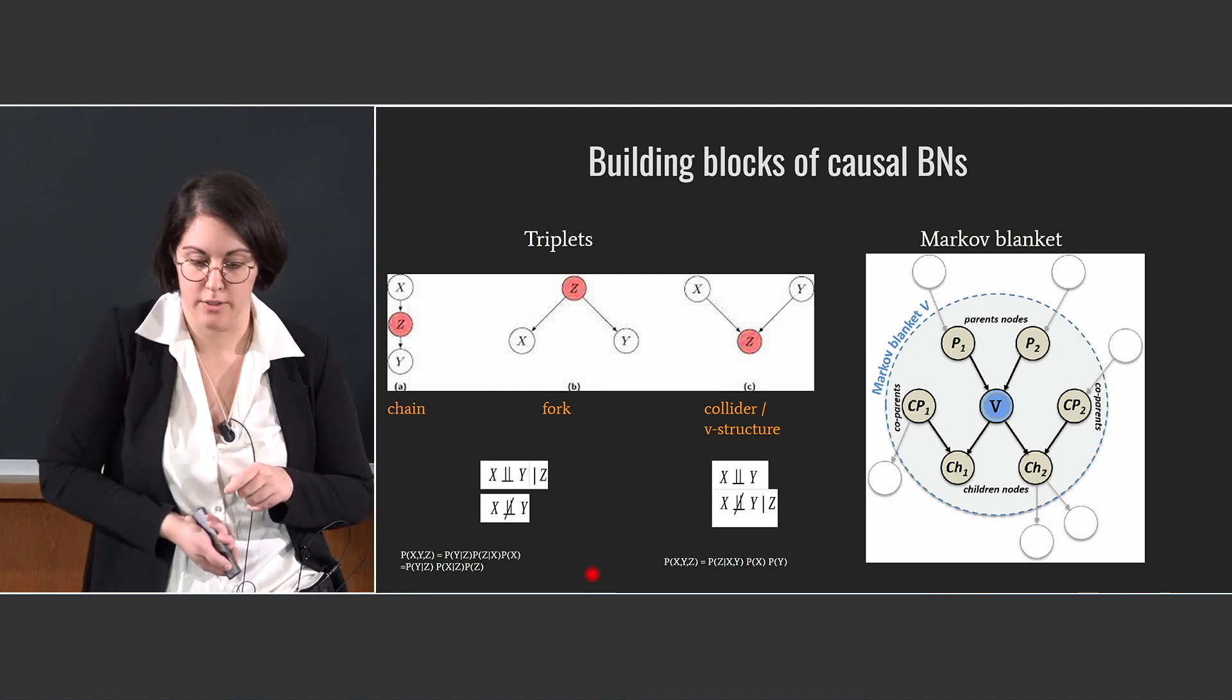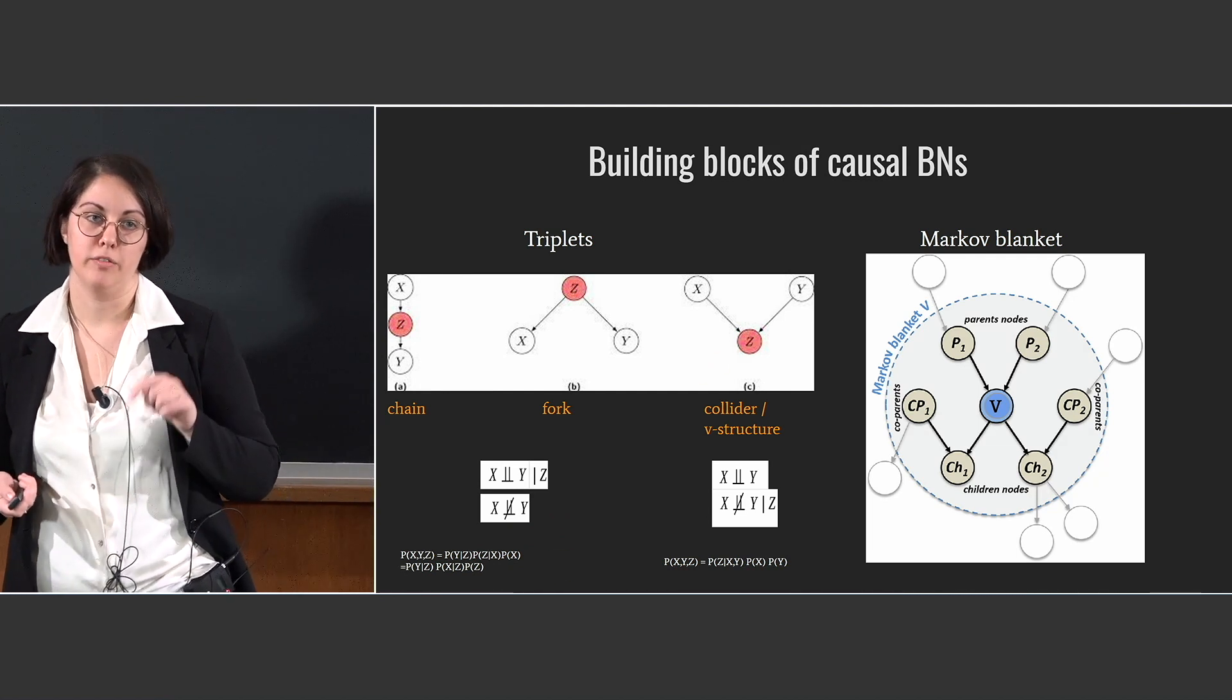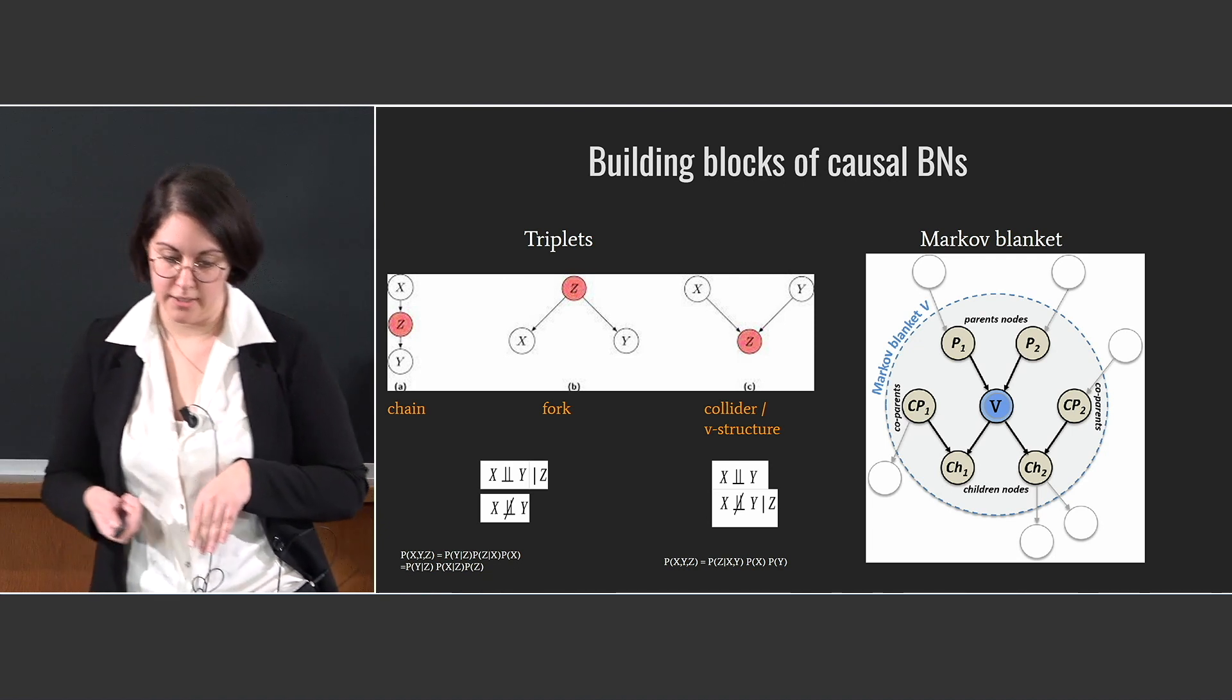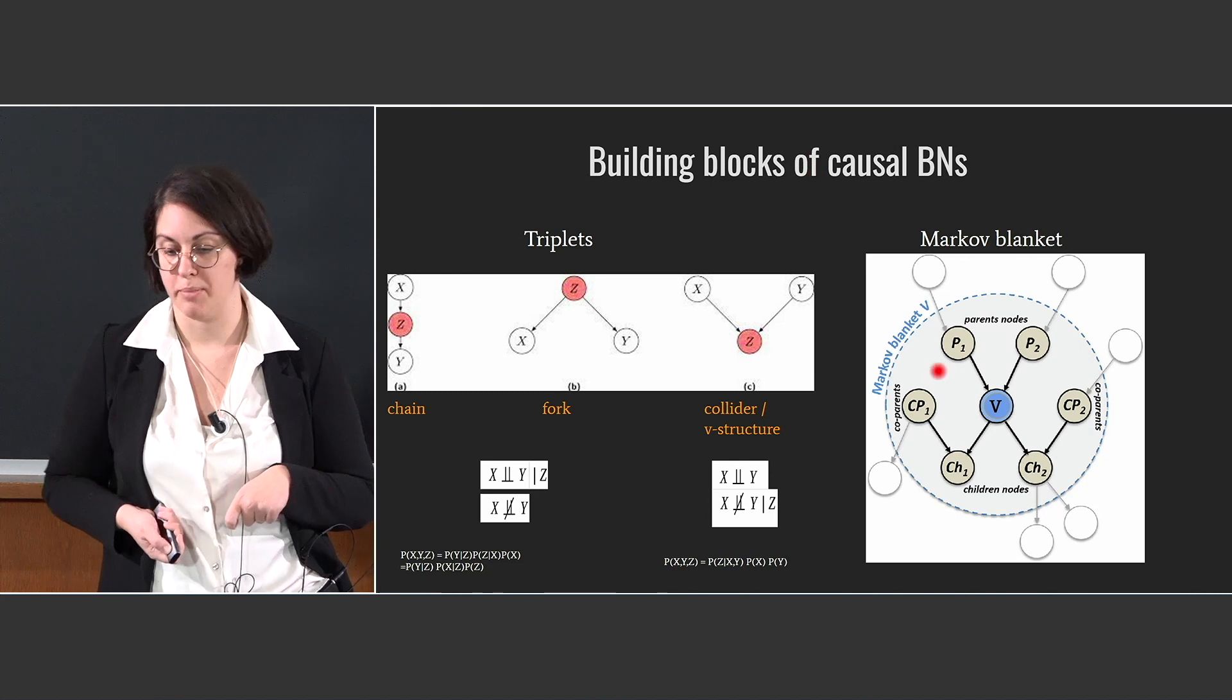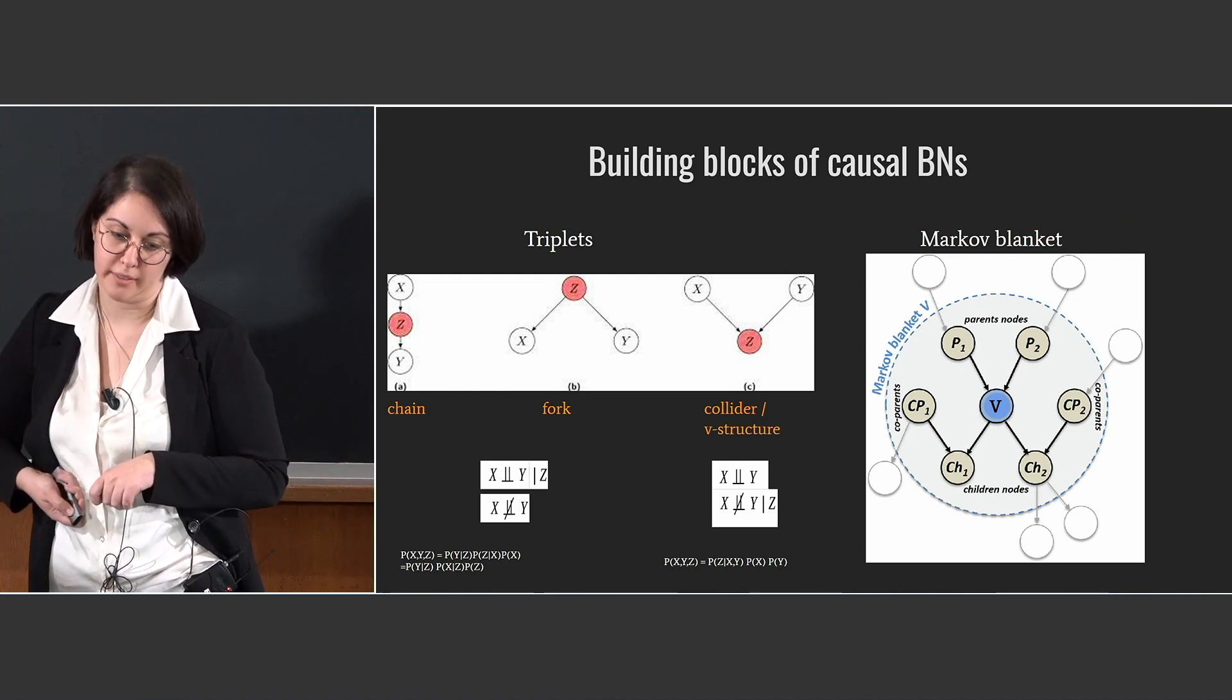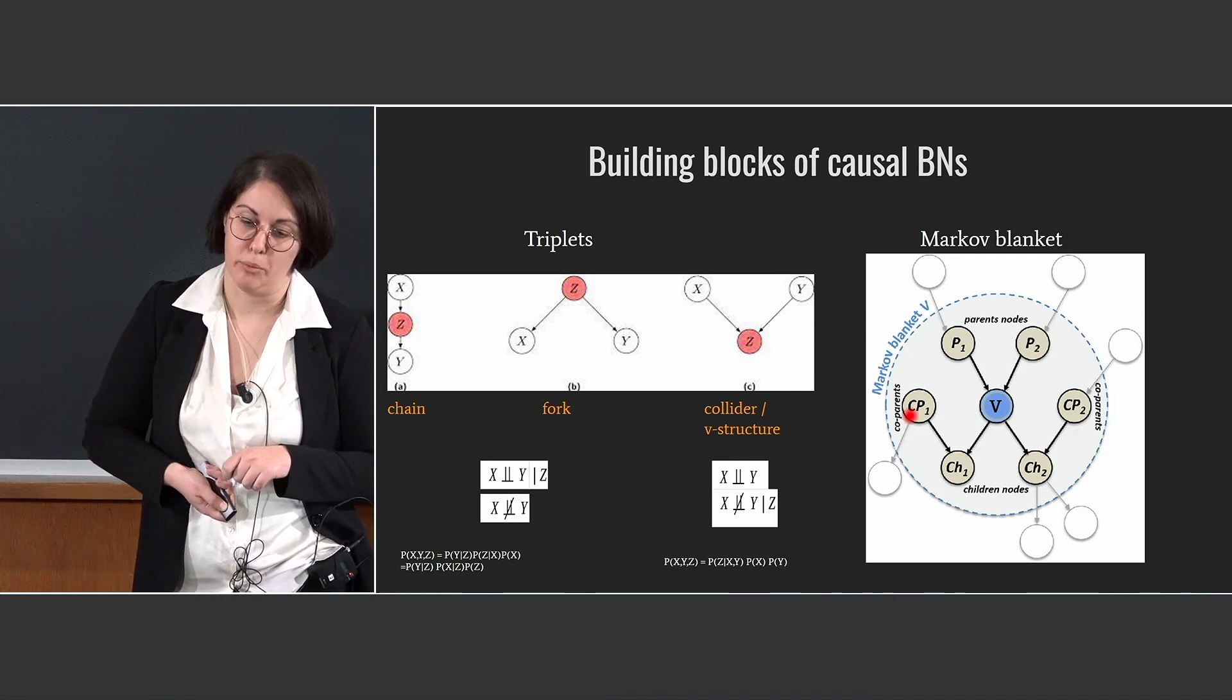If we look at the joint probability distribution factorization, we see that the chain and the fork goes in the same Markov equivalence class in the causal graph space, while the collider is separated. And this will be used in the construction of the Bayesian network from the constraint-based algorithms. And we can define another important block of the causal Bayesian network, that is the Markov blanket, that is defined as the set of parents nodes and children nodes of a variable v and the co-parents of the children.